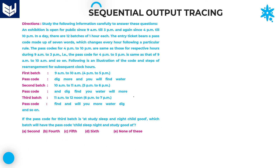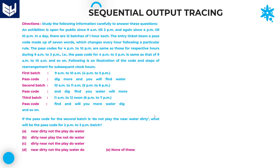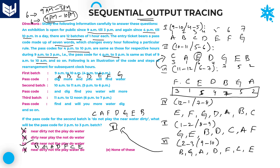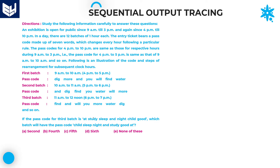Next question: the passcode for the third batch is given. Which batch will have a given passcode? Third batch is F, C, E, D, B, G, A. Now the question gives a code starting with G, E, B, D, C, A, F — check which batch this matches.